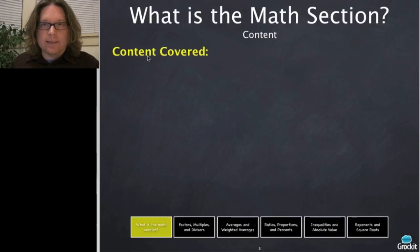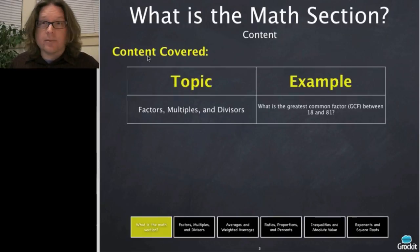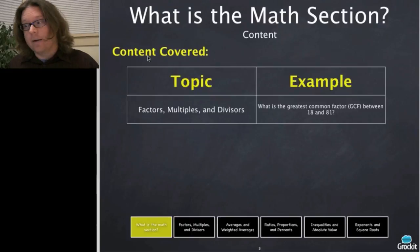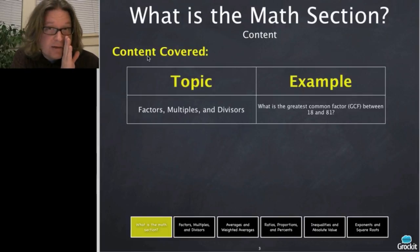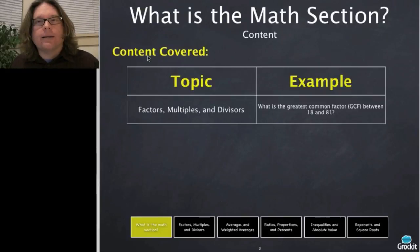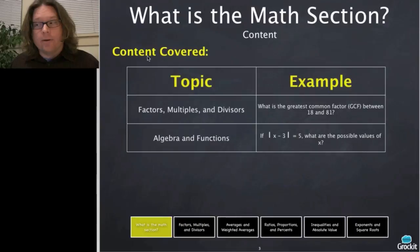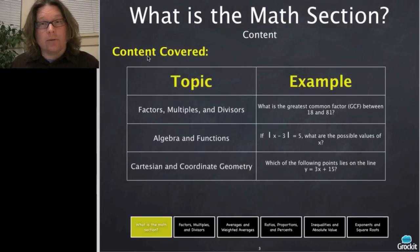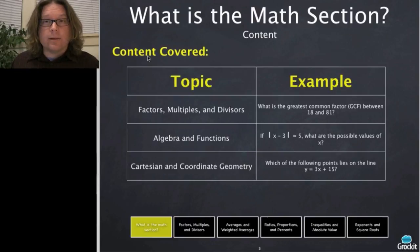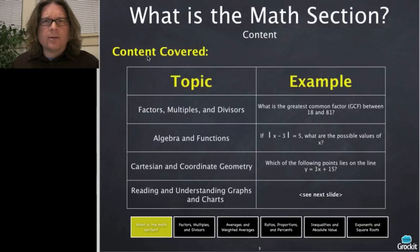The math section on the ACT covers a variety of content. It includes factors, multiples, and divisors — for example, what is the greatest common factor between 18 and 81? Algebra and functions: you need to know how to handle absolute value questions like the absolute value of x minus 3 equals 5. Cartesian coordinate geometry deals with xy axes and graphing.